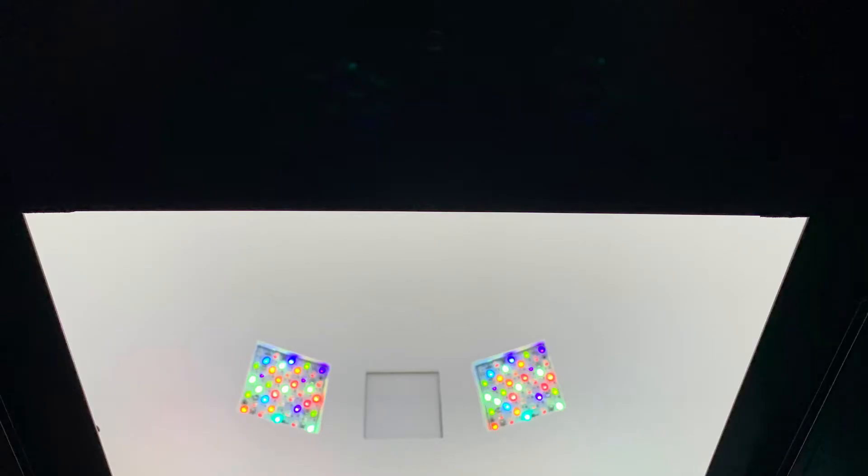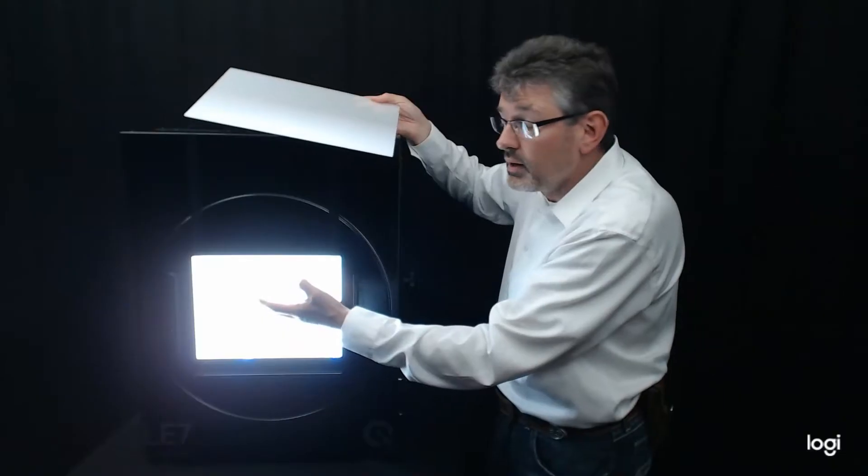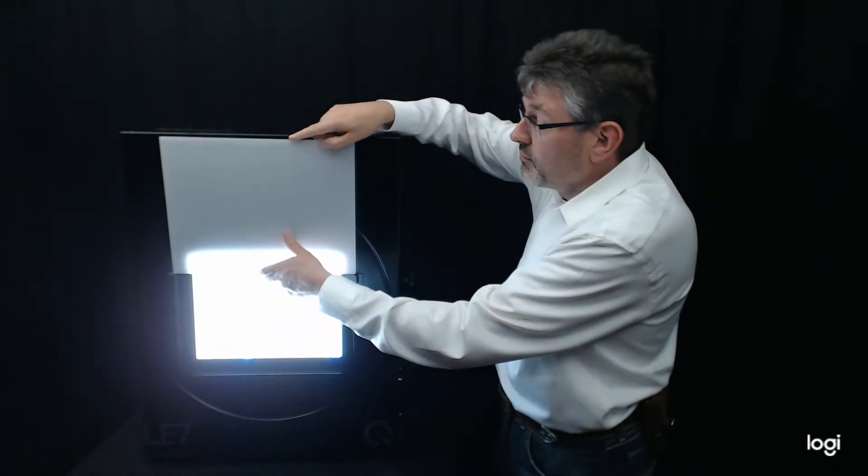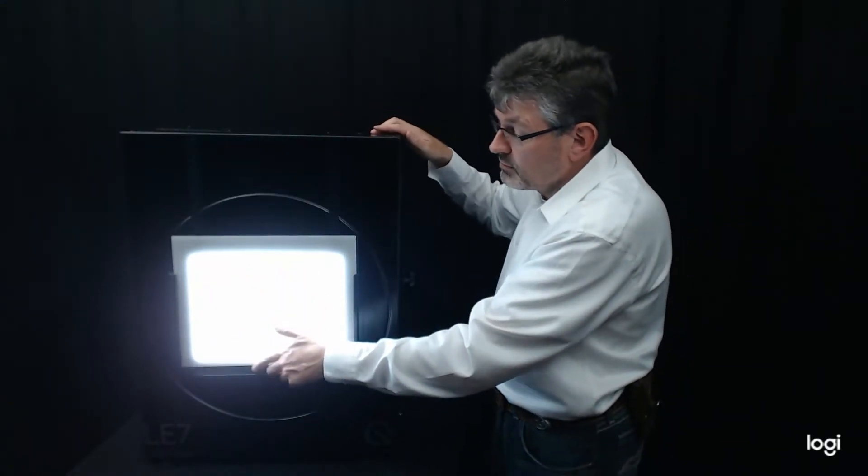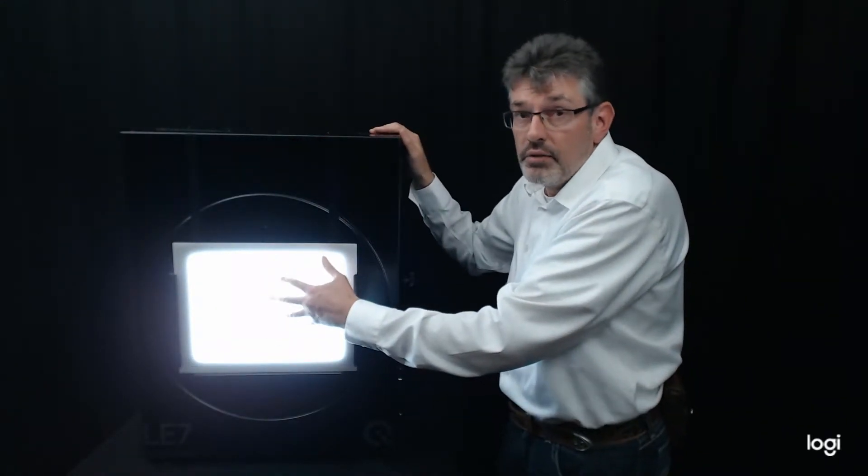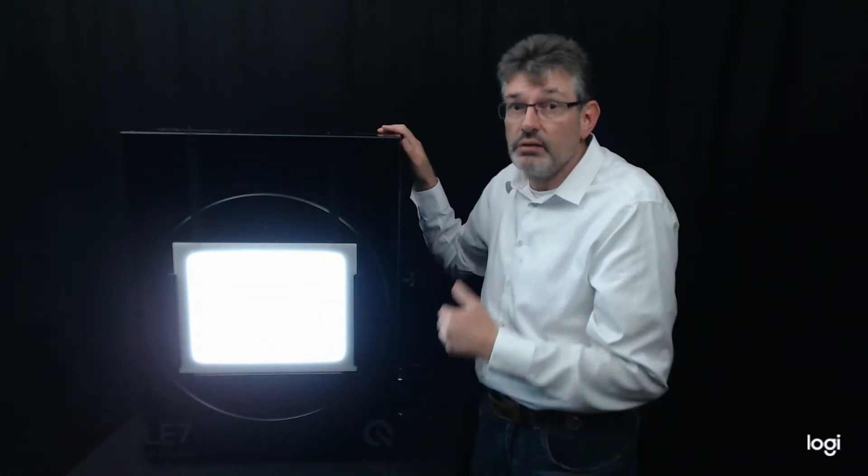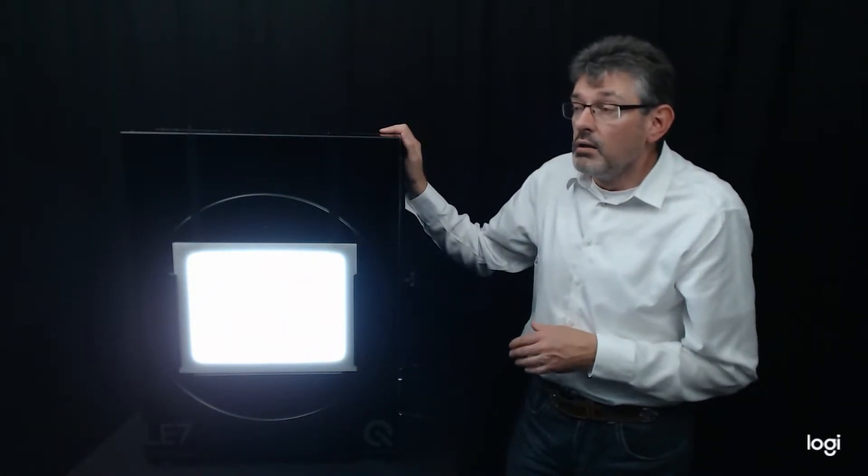So as you can see we do have the light sources in there. They shine into the integrating sphere and then we have a test chart here on the output side that is illuminated uniformly. So that's what it's designed for, illumination of test charts.